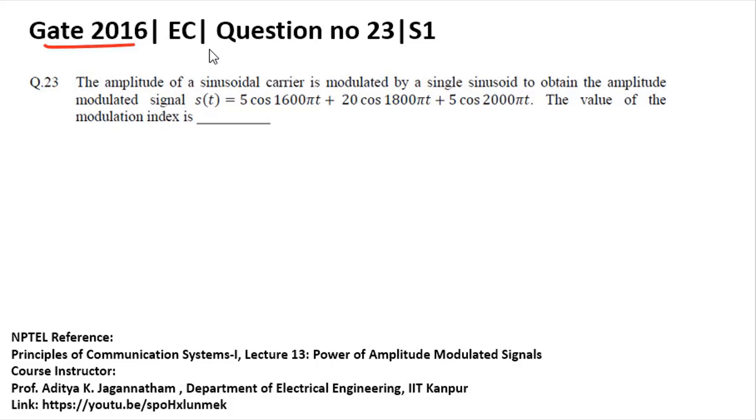This is a question asked in GATE 2016 Electronics and Communication paper, set one, in which the amplitude of a sinusoidal carrier is modulated by a single sinusoid and the amplitude modulated signal s(t) is represented by this expression. Then you need to find out the value of the modulation index.